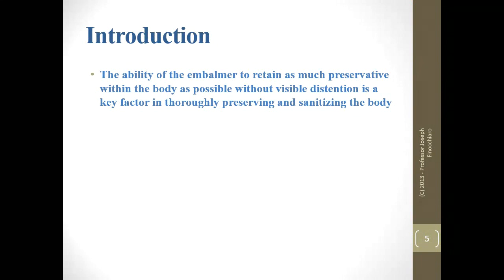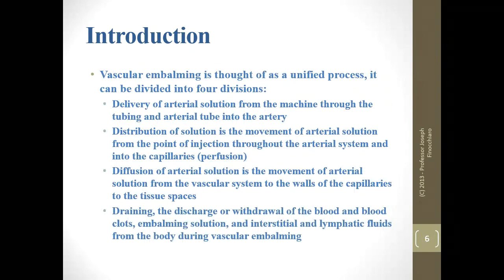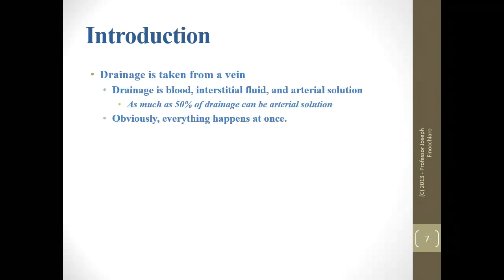Vascular embalming is thought of as one process — inject and it's done — but theoretically there are four divisions: delivery of solution through the tubing and arterial tube; perfusion, which is solution moving through the arterial system to the capillaries; movement from the vascular system through capillary walls to the tissue spaces; and drainage of fluids either by circulating through the vasculature out via the veins or being pushed into tissue spaces and removed via the lymph.